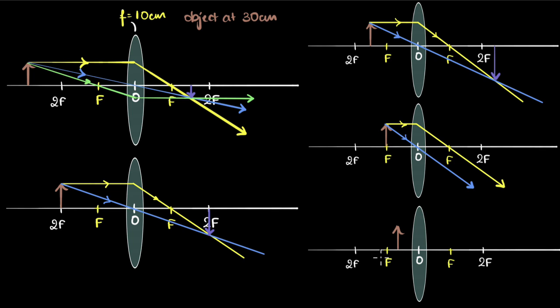And in the final case you have the object in between f and o. Well, again same thing. You have one ray parallel going through the focus. Another one goes undeviated through the optic center. This time also they don't meet but they're not parallel. You can see they're diverging. The two rays are going away from each other.